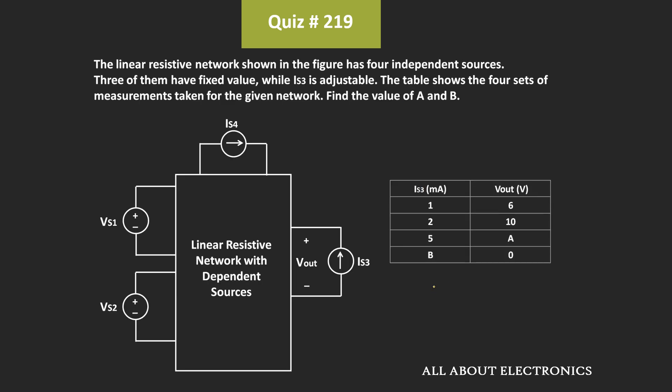So in this way, we got the value of A as 22V and the value of B as -0.5mA.